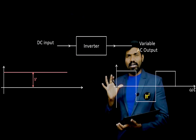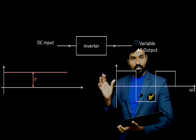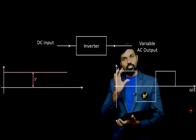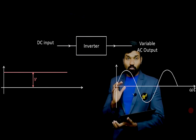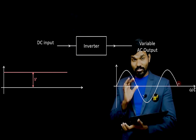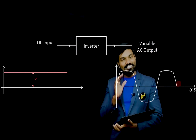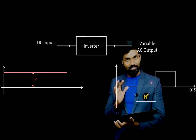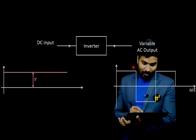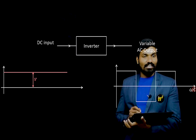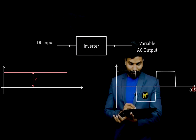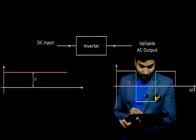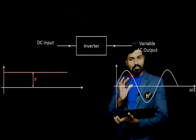You can see the inverter block diagram — simple block schematic with input and output. The output we usually get is a square wave, but what we want is a sinusoid. There is a huge difference between a sinusoid and this square wave. However, this square wave signal can be converted into a modified form more easily than a pure sine form.